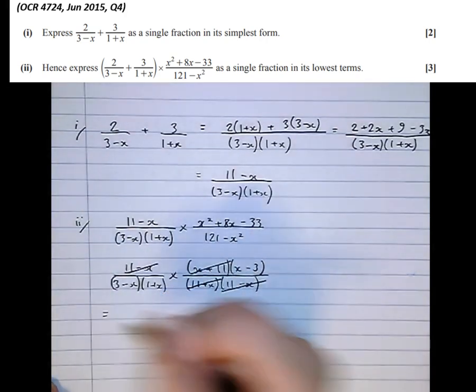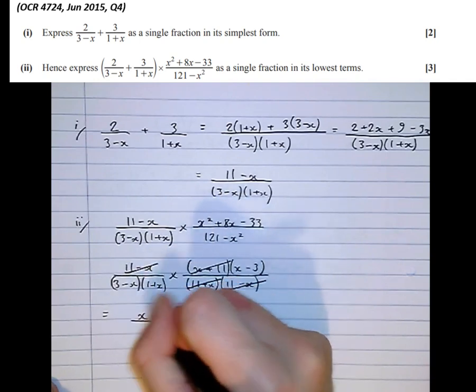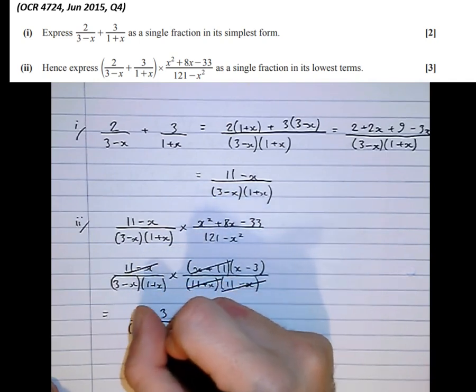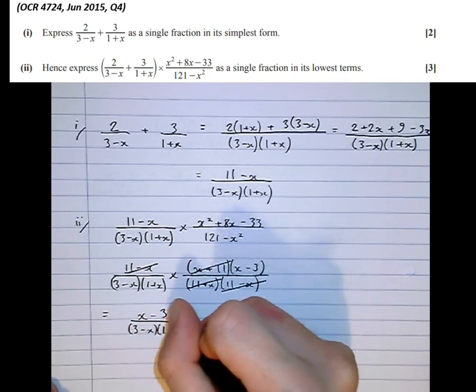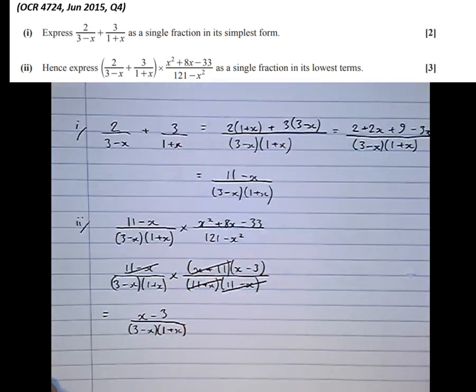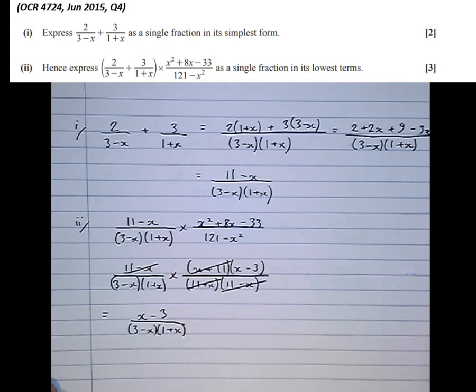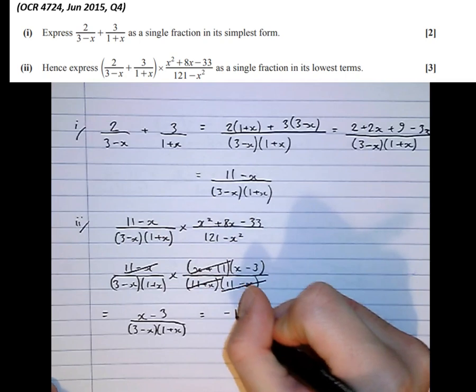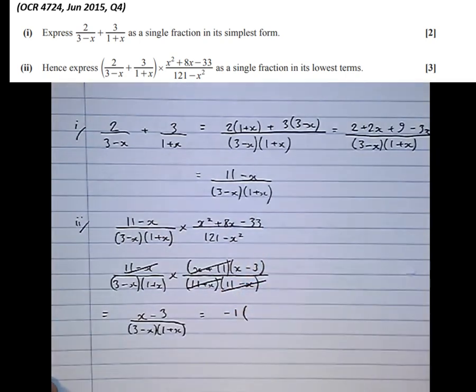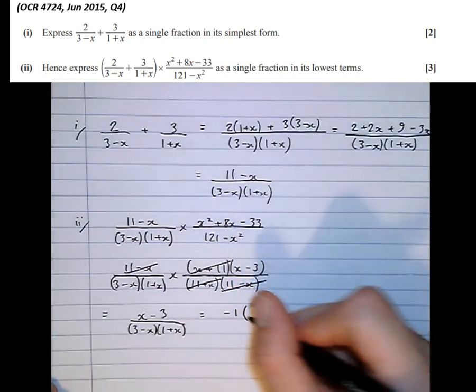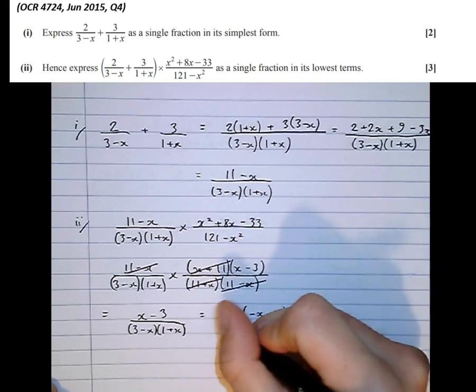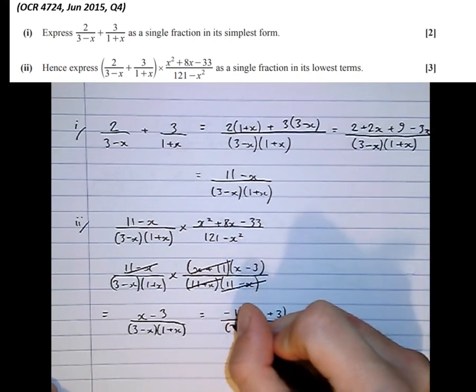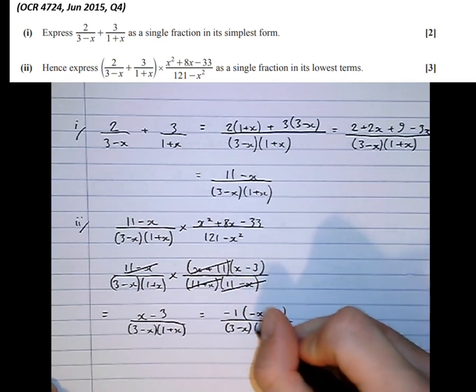OK, so that gives us x minus 3 over 3 minus x, 1 plus x. And the next bit's a little bit sneaky. Because if we take out a factor of minus 1 on top, that turns that from x minus 3 to minus x plus 3 over 3 minus x, 1 plus x.